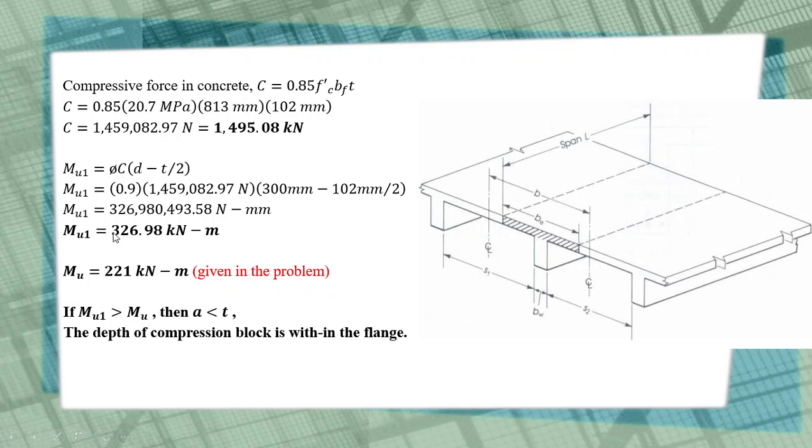Then we need to compare this MU1 with the design MU which is given in the problem. So we can see that considering all the area in the flange is in compression, the value is greater than the design MU of 221 kN-m. This means the whole area of the flange is more than enough to resist the design MU. So the depth of compression block is within the thickness of the slab or less than t.